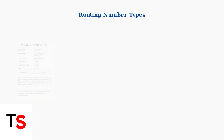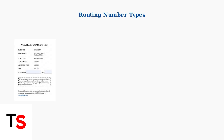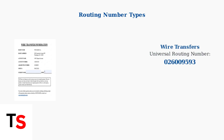When using your Bank of America routing number, it's crucial to understand that different types of transactions require different routing numbers. For wire transfers — both domestic and international — Bank of America uses a universal routing number: 026-09-593.